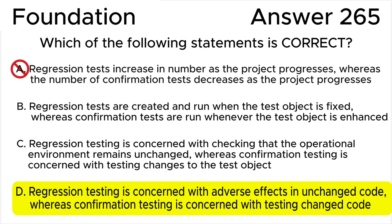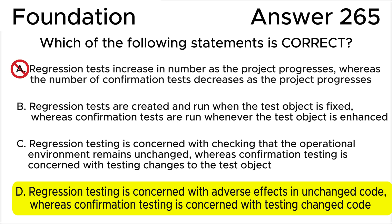Answer A is not correct because regression tests increase in number as the project progresses, as new regression tests are typically required as changes are made to the system. Similarly, the number of confirmation tests also typically increases as the project progresses, as new confirmation tests are needed for each fix made to a system.